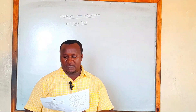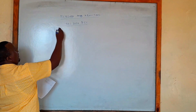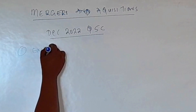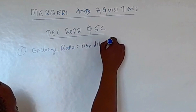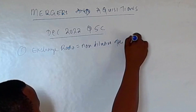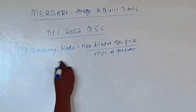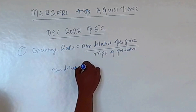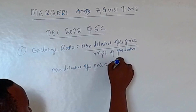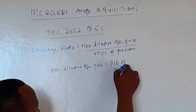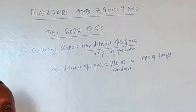You are required to find the maximum exchange ratio that Alpha Limited should agree to if it expects no dilution in the post-acquisition earnings per share. The exchange ratio equals the non-dilutive offer price divided by the MPS of the predator. The non-dilutive offer price equals the P/E ratio of the predator multiplied by the EPS of the target — all figures before the acquisition.